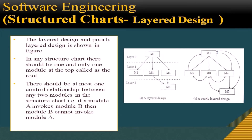The slide shows layered design and poorly layered design. In any structure chart, there should be one and only one module at the top, called the root — represented here as module M1. There should be at most one control relationship between any two modules. For example, if module A invokes module B, then module B cannot invoke module A. This distinction between layered and poorly layered design is shown in the figure.